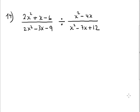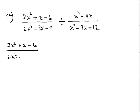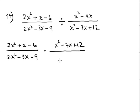This problem is division of two rational expressions. Remember: copy the first fraction exactly the same — don't touch the first — then change the division to multiplication when you find the reciprocal of the second fraction. Copy x squared minus 7x plus 12 and x squared minus 4x.